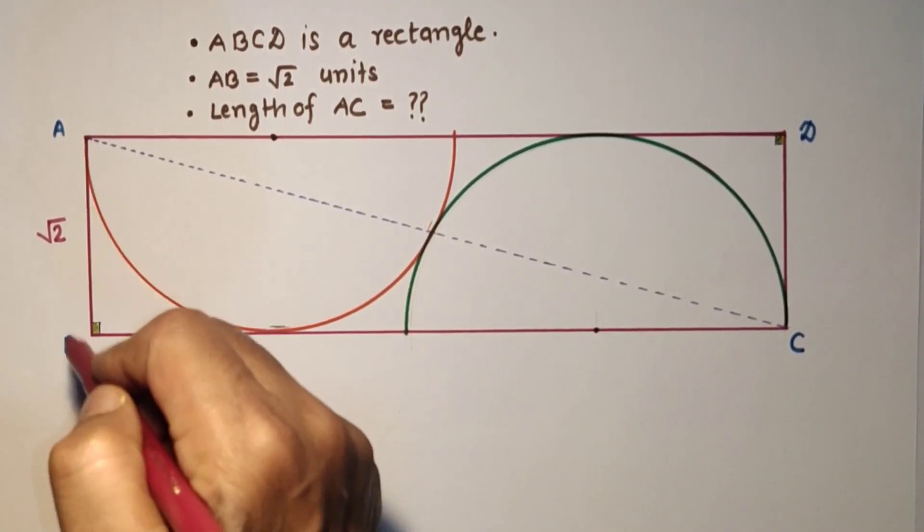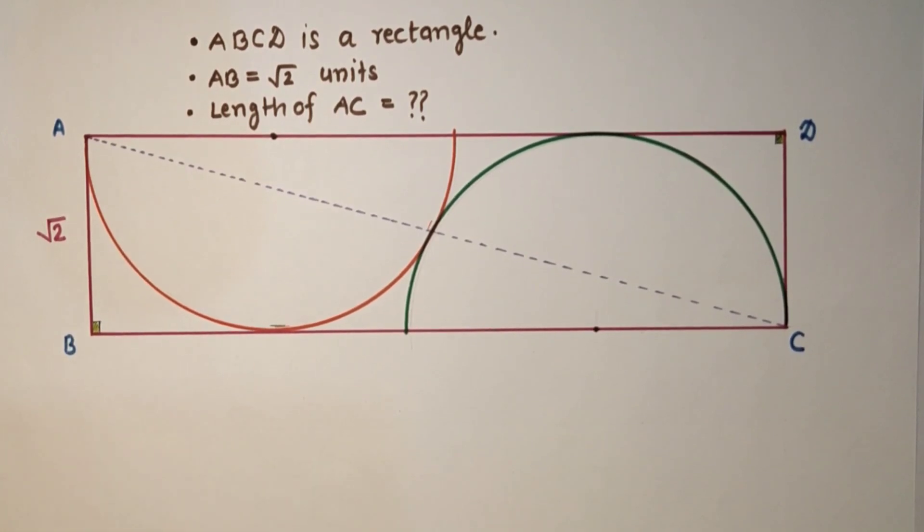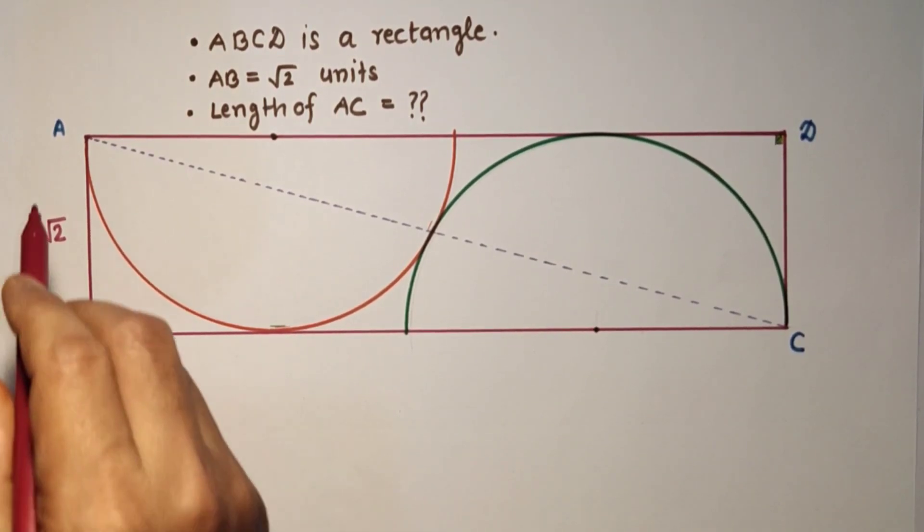We are given that AB length is root 2 units and we have to find the length of this diagonal AC.